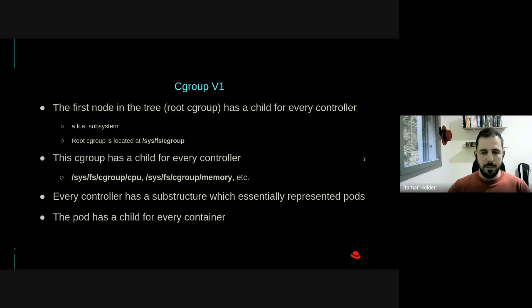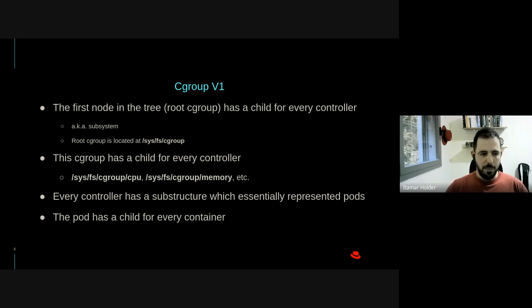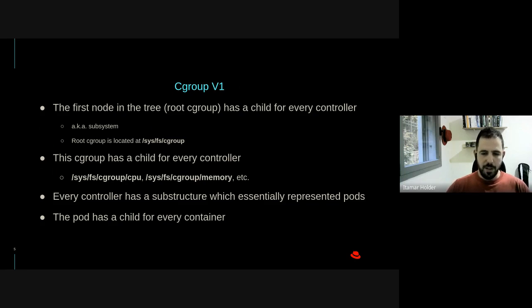In Cgroup v1, the first node in the tree — the root Cgroup — has a child for every controller. A controller, also called a subsystem, is what manages the resources. We have a CPU controller, CPU set controller, memory controller, and so on. The root Cgroup is always located at /sys/fs/cgroup, and we have another directory within it for every controller. Essentially every controller has a substructure representing pods, and pods have a child Cgroup for every container.